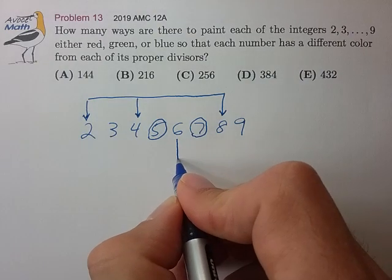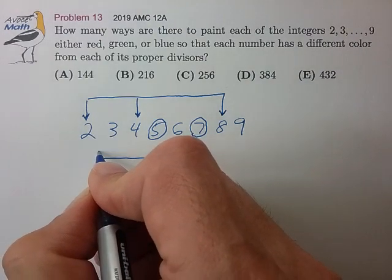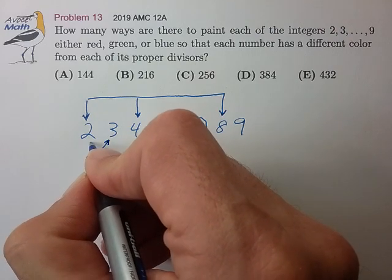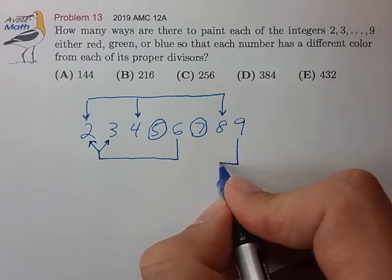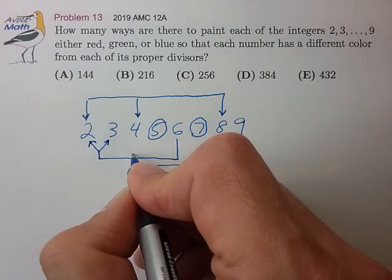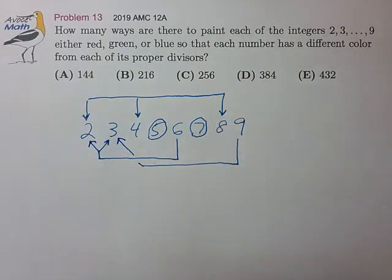6 is connected to both 2 and 3, but 2 and 3 are not connected to each other, and 9 is connected to 3. All right, those are the connections.